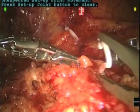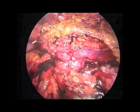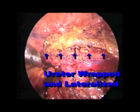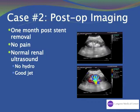Here is the laparoscopic view of the final product. This is where the retroperitoneal fibrosis is, and here is where the ureter now lies — wrapped and lateralized with omentum. Here we are one month after the stent has been removed: the patient has no pain, normal ultrasound, and good ureteral jets.